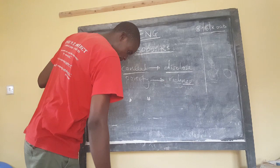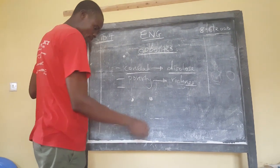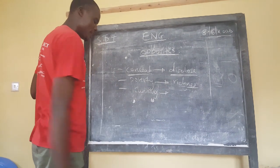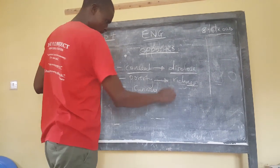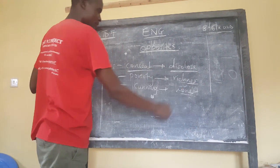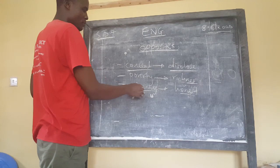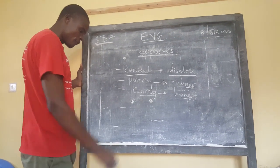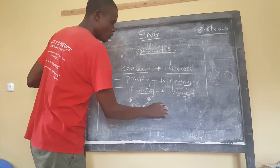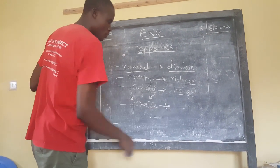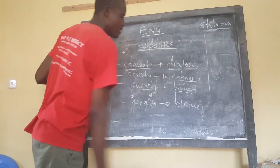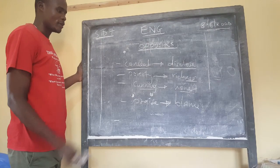We also have 'cunning' — this man is a cunning man. The opposite of cunning becomes 'honest' — the man who speaks the truth, an honest man versus a cunning person. Then we have the word 'praise' — people will always praise you when you are doing good, and people will always blame you when you are not. So praise is to blame.